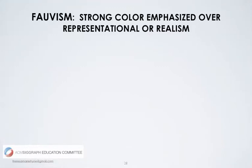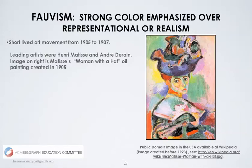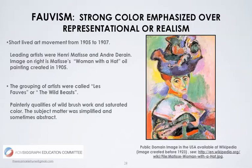Fauvism is a strong color emphasized over representational or realism. It was a very short-lived movement from 1905 to 1907. Henri Matisse is one of the leading artists; we show his oil painting Woman with a Hat from 1905. It was a grouping of artists called 'the wild beasts' because of the bold color strokes used. Matisse is not interested in the true colors of a woman's face, but rather uses green, orange, and yellow tones, using complementary tones between green and pink to emphasize sections of her face, with heavily complementary colors of green and magenta and violet and yellow in the background.